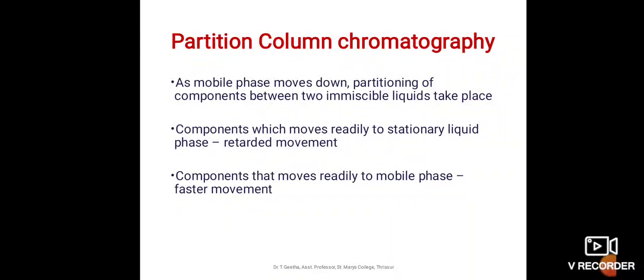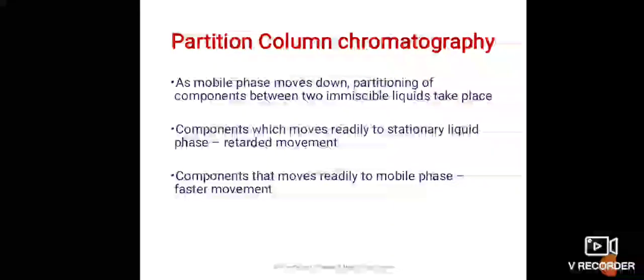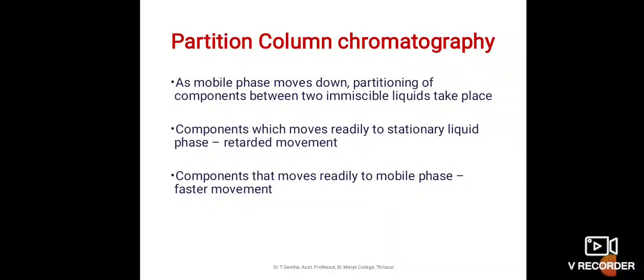As mobile phase moves down, it carries with it different components of the mixture which are partitioned between the two phases at varying rates. Components with greater affinity to stationary liquid phase move slowly, while those with more affinity to mobile phase move at a greater rate through the column.